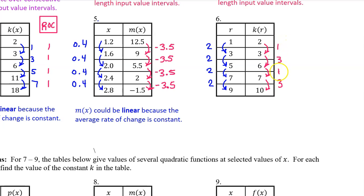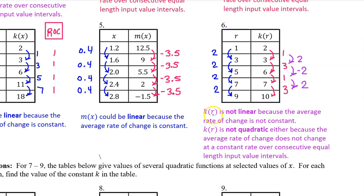For number 6, these are the changes in the output values and the changes in the input values. Because we do have consecutive equal length input value intervals, we don't have to calculate the average rate of change to see that it is not constant — so k of r could not be linear. K of r could not be quadratic either because the rate of change is not changing at a constant rate. K of r is not linear because the average rate of change is not constant, and not quadratic because the average rate of change does not change at a constant rate over consecutive equal length input value intervals.